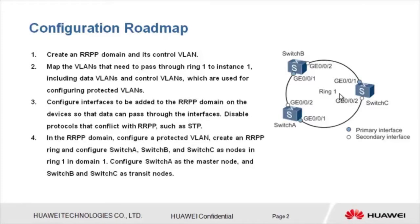In the RRPP domain, configure a protected VLAN, create an RRPP ring, and configure Switch A, B, and C as nodes in ring 1 in domain 1. Step 5: Configure Switch A as the master node and Switch B and Switch C as transit nodes. Then enable the RRPP ring and RRPP on all devices.